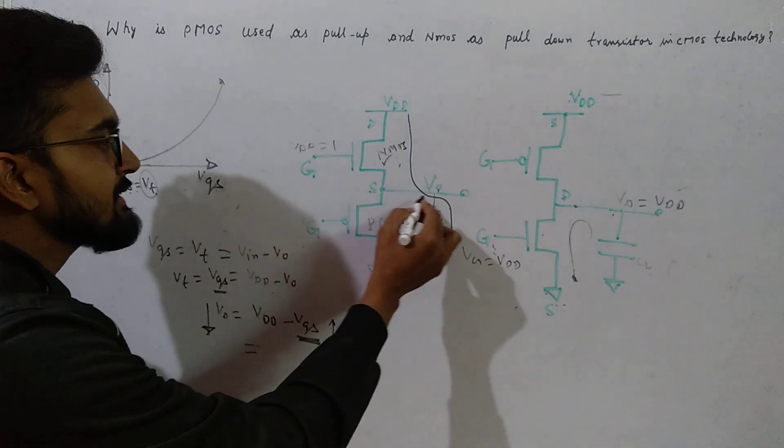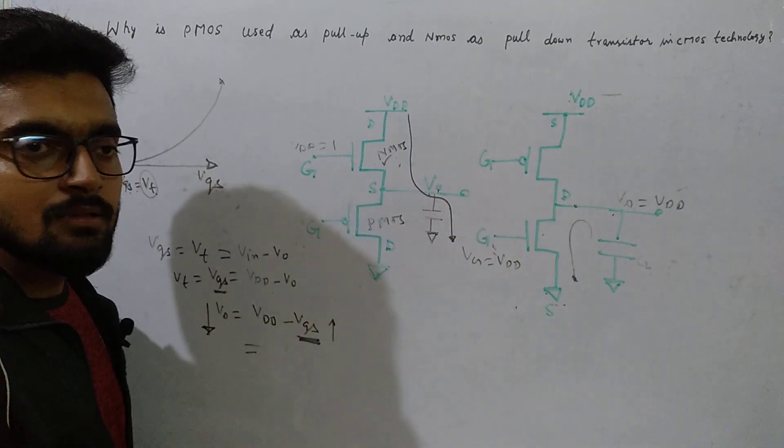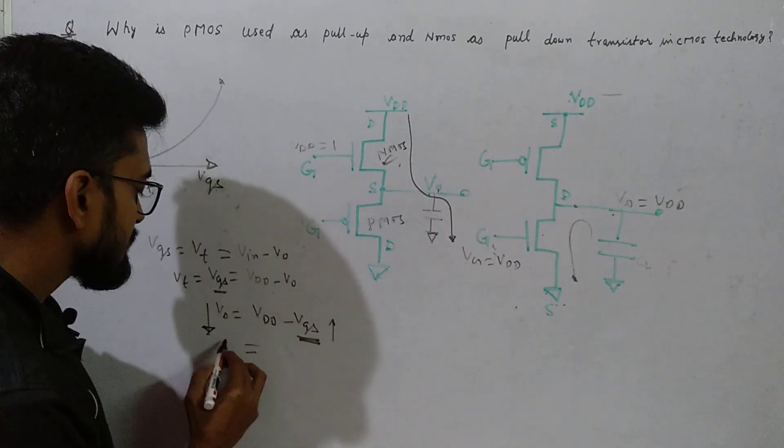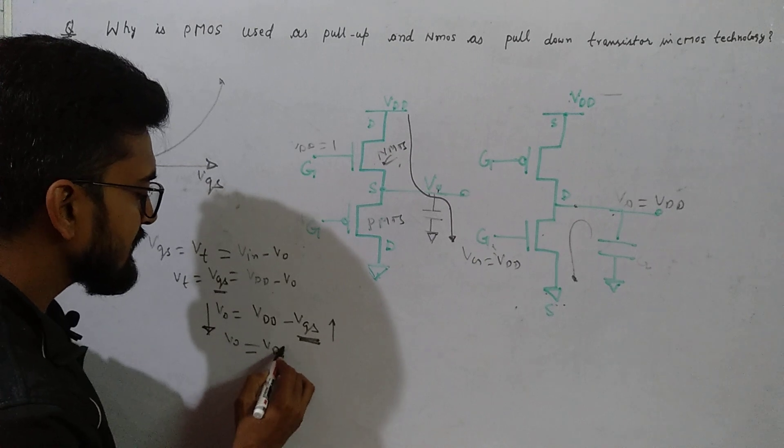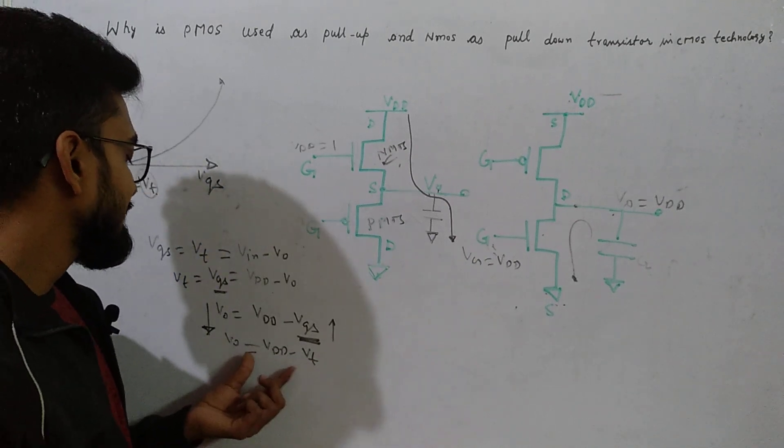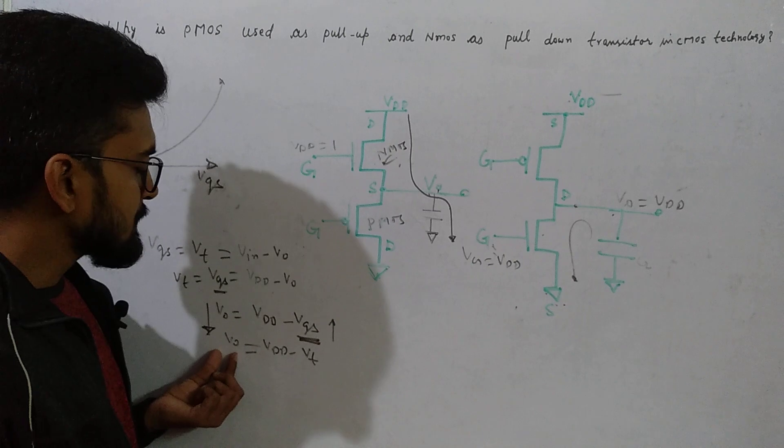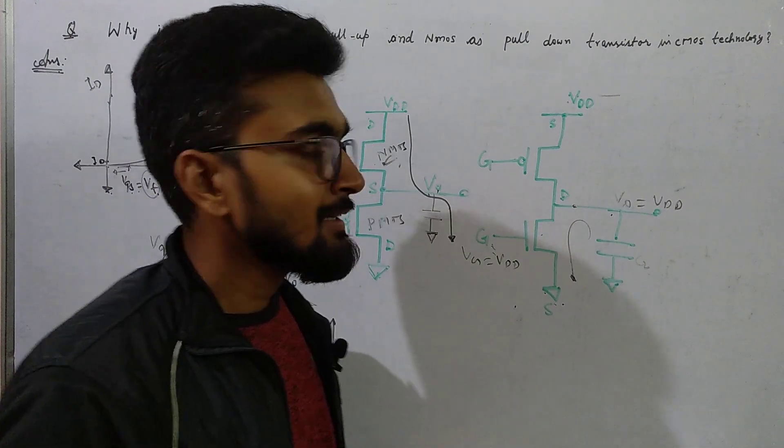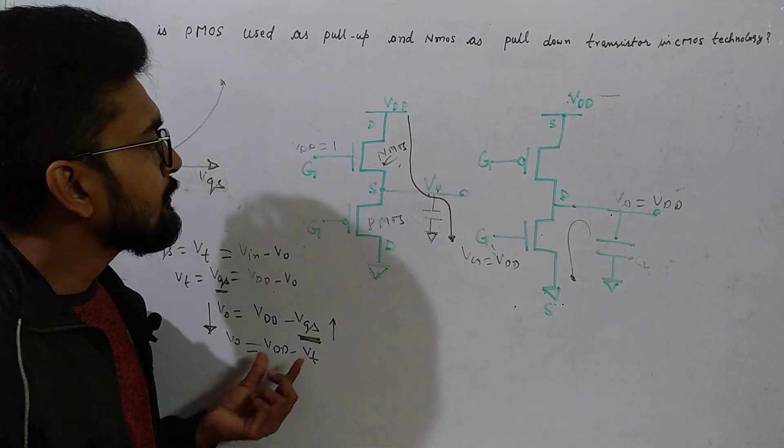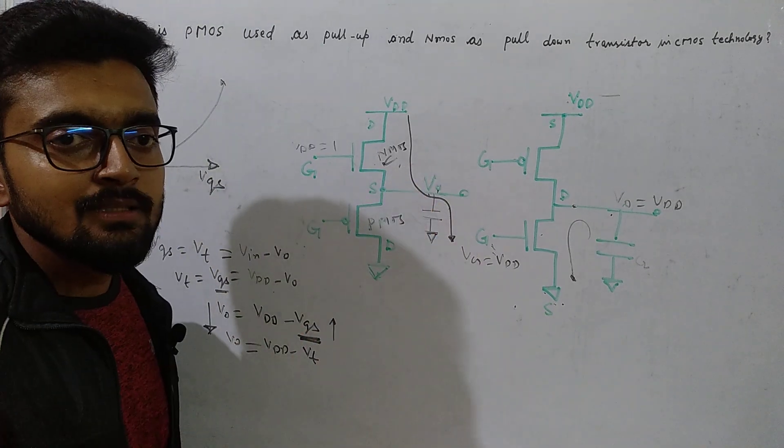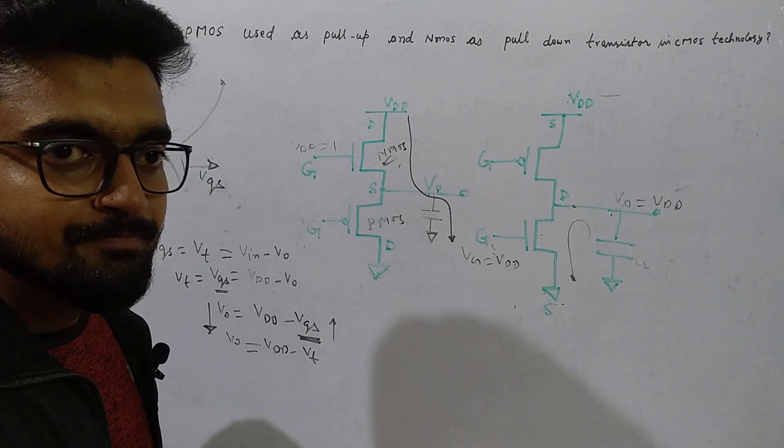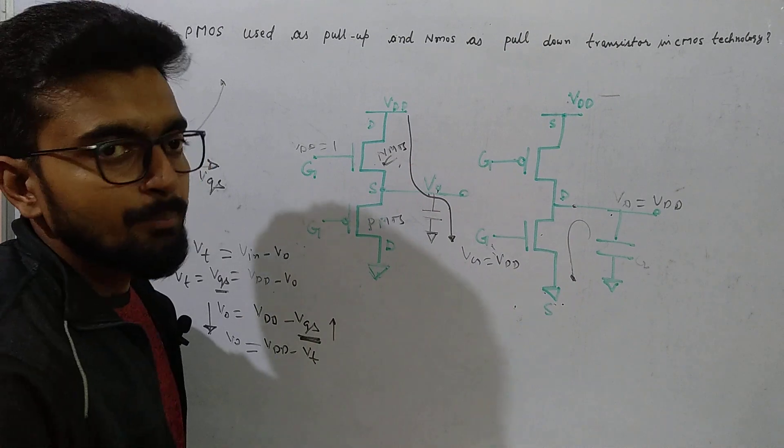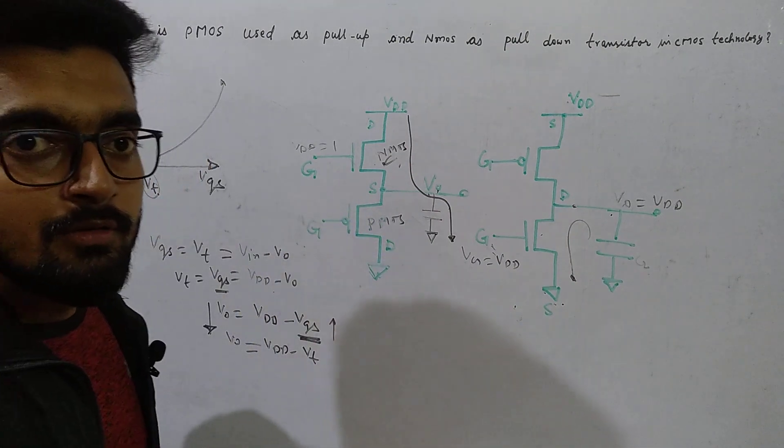The maximum value to which we can charge the capacitor is the value for which NMOS transistor stays on, so V output equals VDD minus VT. We cannot increase the value of output more than this. The capacitor can never be charged to a value more than VDD minus VT when we consider NMOS as pull-up network. That is why we prefer using PMOS as pull-up network and NMOS as pull-down network.